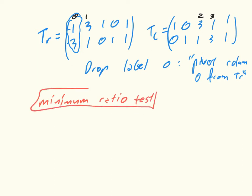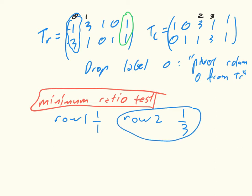What we do for the minimum ratio test is we look at the ratio of the last column over the first. In our case, we have row 1 has ratio 1 over 1 and row 2 has ratio 1 over 3. So the minimum ratio is the second row.